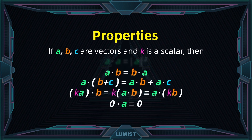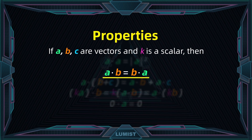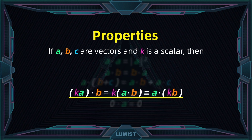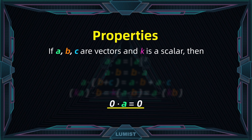The remaining properties are fairly straightforward. We can switch the order of two vectors being dotted and get the same result. The dot product is also distributive over vector addition: a dot (b + c) equals a dot b plus a dot c. Similarly, for scalar multiplication, (k·a) dot b equals k times (a dot b). Finally, dotting any vector with the zero vector gives zero, since all entries get multiplied by zero.